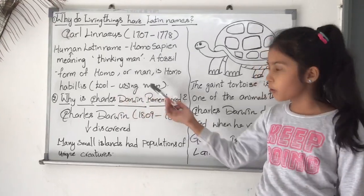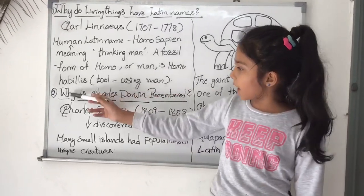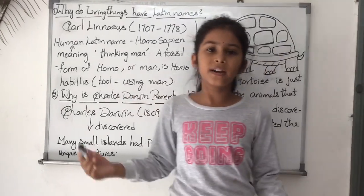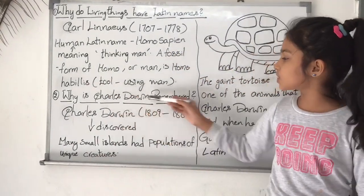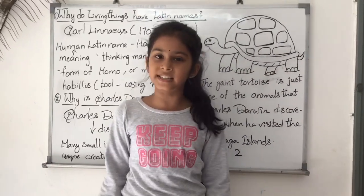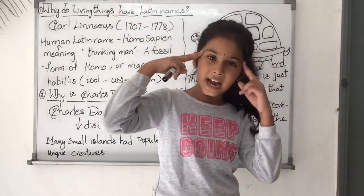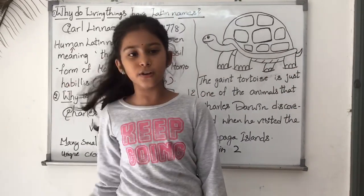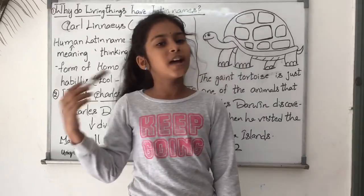A fossil form of Homo, or man, is Homo habilis, meaning 'tool-using man'. Now let's go into the second topic: why is Charles Darwin remembered? The English scientist Charles Darwin is remembered for his ideas about evolution after years of study and travelling on voyages of exploration.